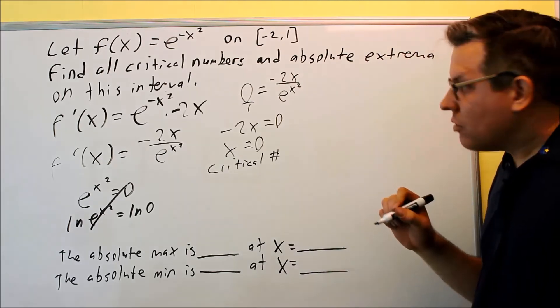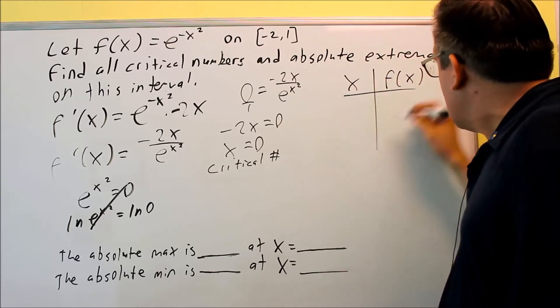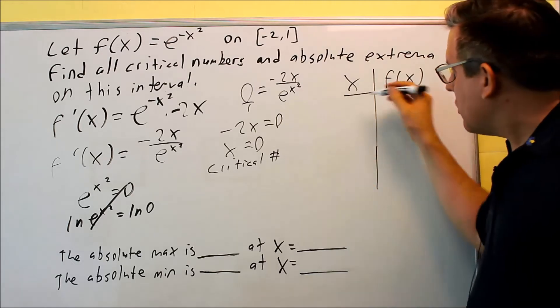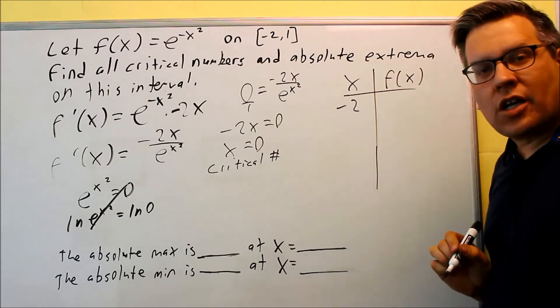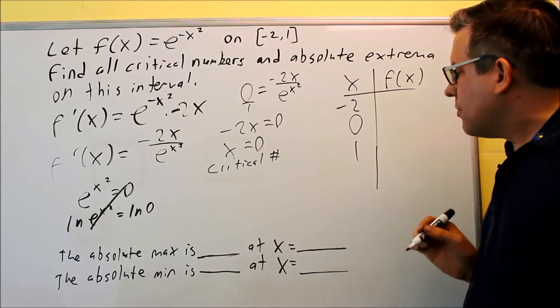So now we're ready to make our table. I have x and I have f of x. Alright, so x, we're going to use the left endpoint. Okay, we start with negative 2. We're going to put our zero in there, and we put our 1 in there.